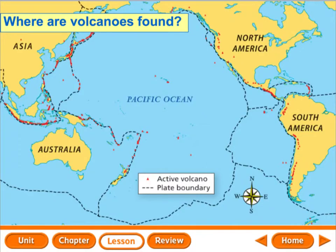Where are volcanoes found? Volcanoes are found on land and on the ocean floor. Fun fact: more than 80% of the volcanic activity on earth actually occurs on the ocean floor. Most volcanoes are actually underwater. They are not here where we live in Kentucky, but you can find them most commonly where plates meet.